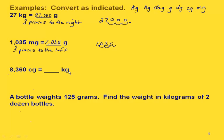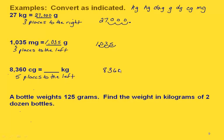Now let's go from centigrams all the way up to kilograms and see how many places we're going. Starting at centigrams and counting: one, two, three, four, five places to the left. We have 8,360 — the decimal point starts after the zero — and we move five places to the left, putting a zero in as a placeholder. We have a zero before the decimal point and one after, giving us 0.08360 kilograms.